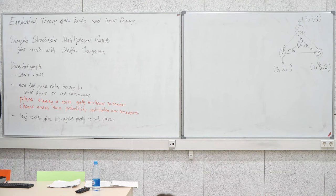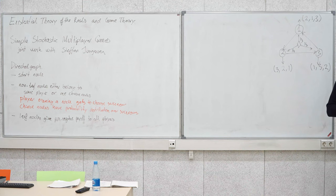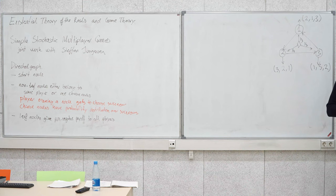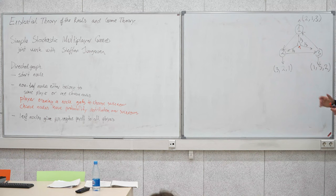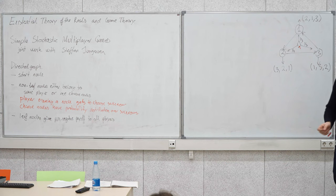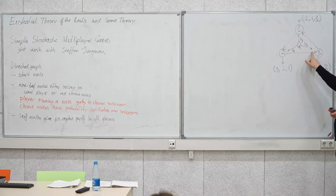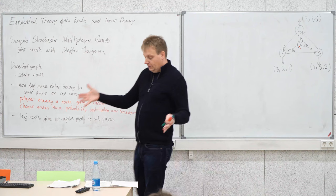A strategy is a mapping from prefixes of play — the history of play so far — into choices at a given node. More formally, it assigns a probability distribution to any finite history of play ending in a node belonging to the player. This is a general mixed or probabilistic strategy. A pure strategy means all probability distributions are point distributions, choosing a single action with probability 1 always.